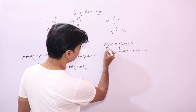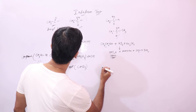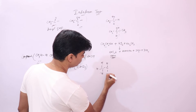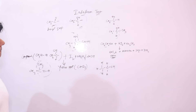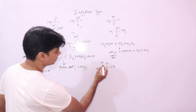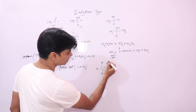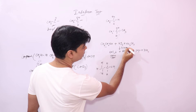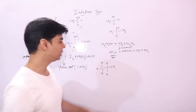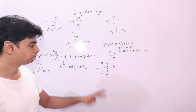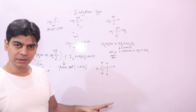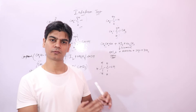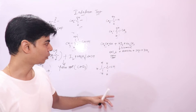Here we have ethanol, CH3CH2OH. It contains the CH3CHOH group, so it will respond positively to the Iodoform test. When warmed with iodine and sodium carbonate, it will give you a yellow precipitate of Iodoform. Now let's see how this reaction exactly takes place — the same steps as the formation of Iodoform covered in the previous lecture.